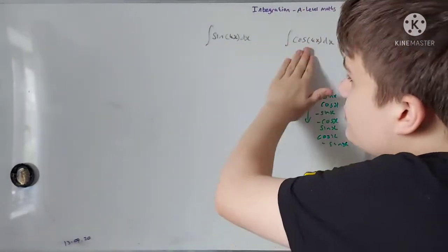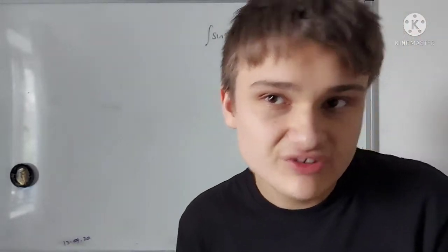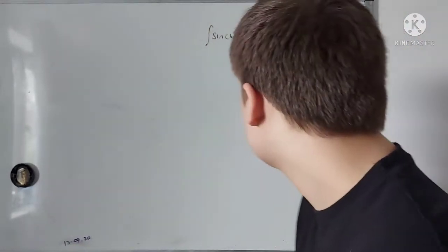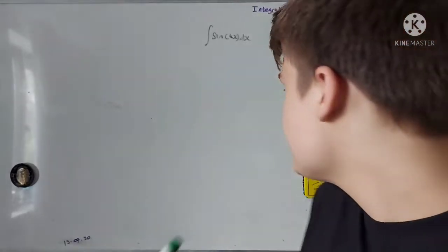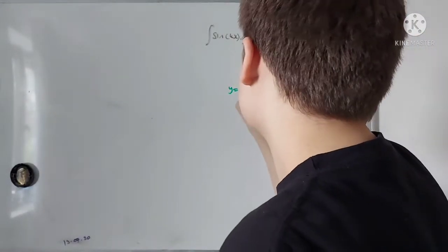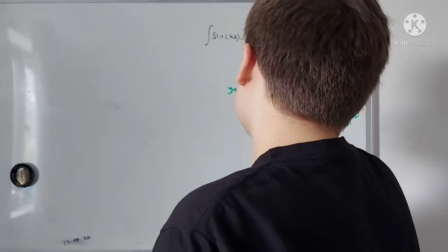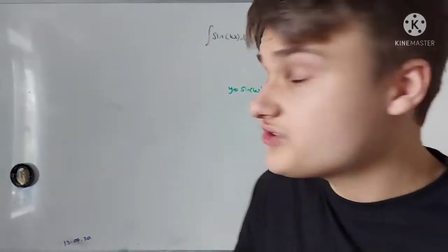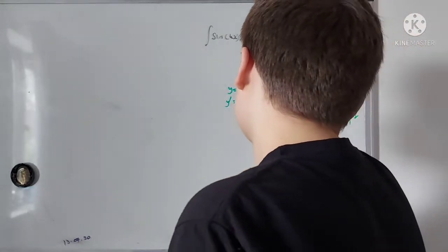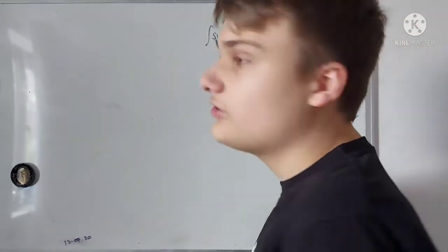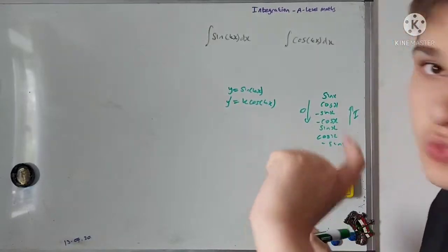So if I wanted to integrate these two, well, using how I integrated e to the kx in a previous video — it's just 1 over k again, and it is. It's really sneaky. If I differentiate y equals sine of kx using the chain rule, y' is just k cosine of kx. So the integral of that brings in a factor of 1 over k.